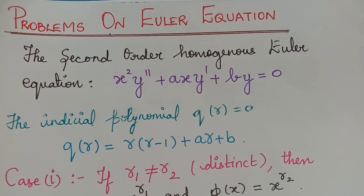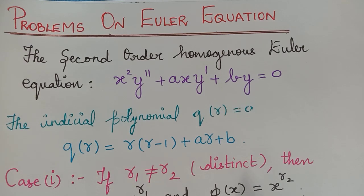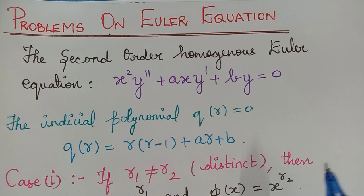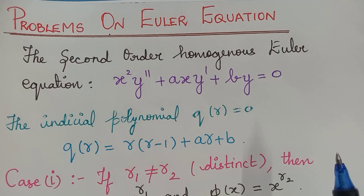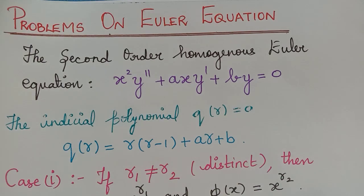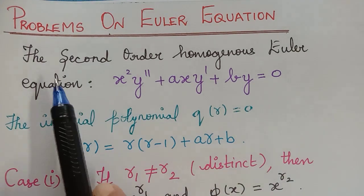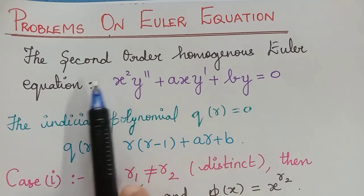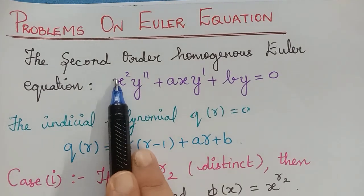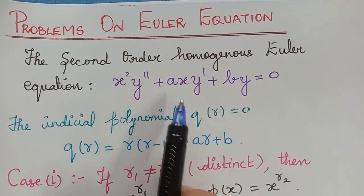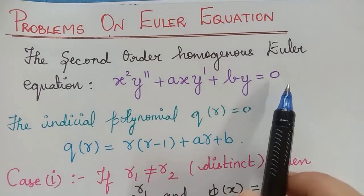Dear students, under the topic Euler equation, here we are going to see problems on second-order homogeneous Euler equation, second-order non-homogeneous Euler equation, and higher-order Euler equation. We shall find the solutions of these Euler equations by using the prescribed method. The second-order homogeneous Euler equation is given by x squared y double dash plus axy dash plus by is equal to 0.